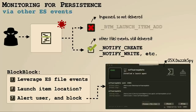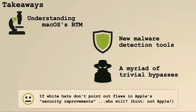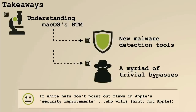Let's wrap up with some takeaways. We talked about understanding macOS's BTM subsystem — important for writing tools and understanding limitations. Once we had an understanding of the internals, we showed how to write powerful malware detection tools built on the fact that Mac malware persists and BTM now governs persistence. Unfortunately, we showed it's trivial to bypass the BTM subsystem entirely. All these approaches work on the latest versions of macOS.